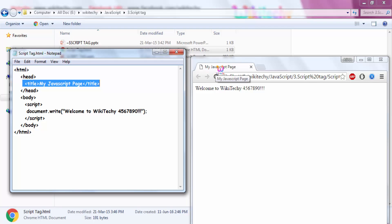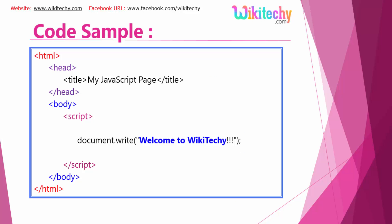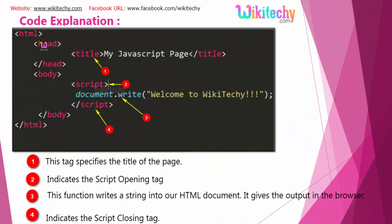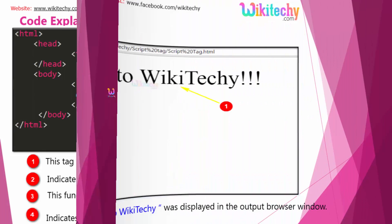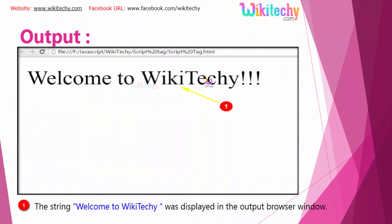This is how your script tag is working. Let me go back here and here is the colorful code representation of our script tag. You are able to see the title, the script opening tag, the closing tag, and the content of your JavaScript. And here is the output we are receiving.